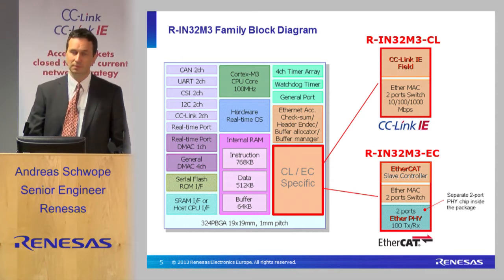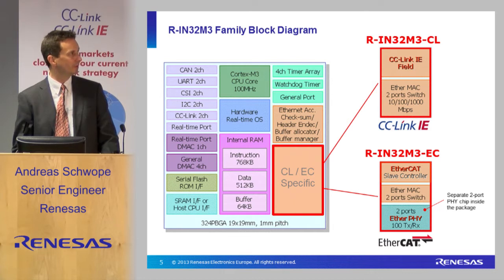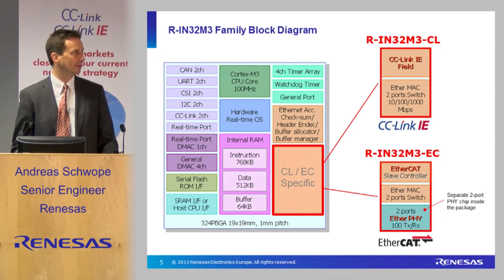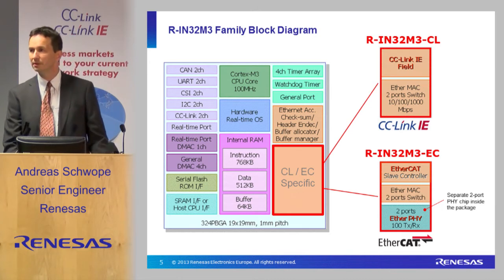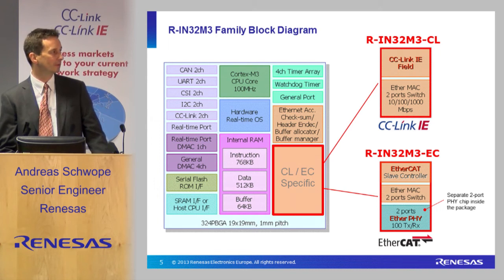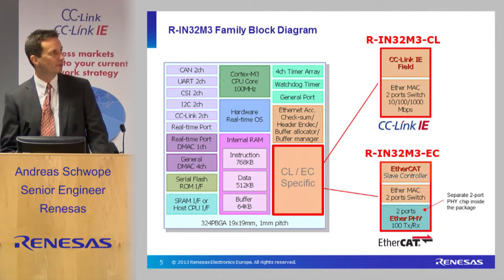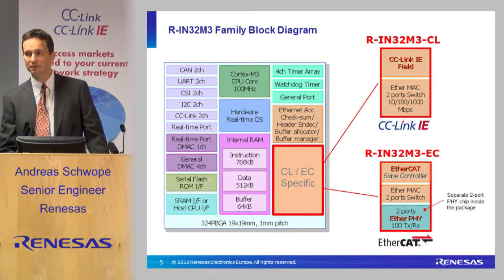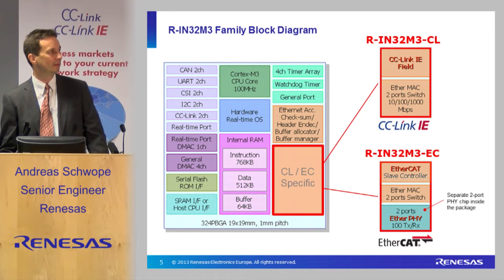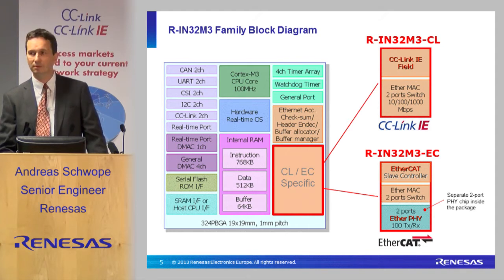This is a general block diagram. For this device family there is a commonality between everything. There are internal blocks for peripherals. We have a Cortex-M3 CPU running at 100 MHz with lots of internal RAM and timers. There is a very important part related to the internal accelerators, which I will explain in detail later. Below are the specifics for the two device families, CL and EC. For CC-Link, we have a CC-Link IE field controller connected to an EtherCAT MAC and a two-port Ethernet switch running at one Gigabit per second. The second device family runs only up to 100 Mbps and has an internal PHY included.